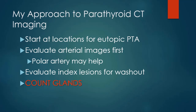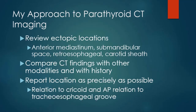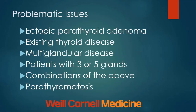My approach to parathyroid CT imaging: I start by looking where typical parathyroid adenomas should be. I look at the arterial images for increased enhancement, find the polar artery, see if they wash out, and then I start counting glands — that is very critical. Then I start looking in ectopic locations. Remember, patients may have more than four glands. I compare CT findings with other modalities and with the history. In reporting location, I relate everything to the relationship of the lesion to the cricoid cartilage and AP in relation to the tracheoesophageal groove.